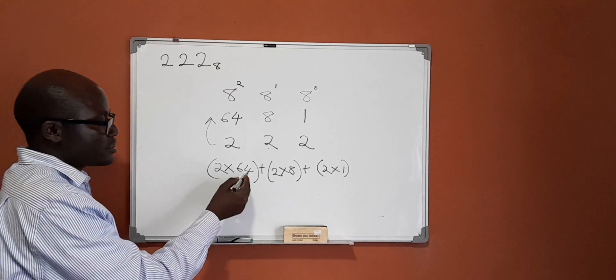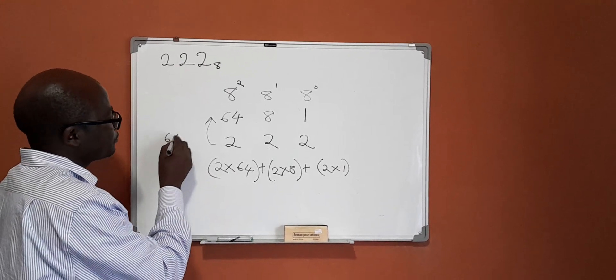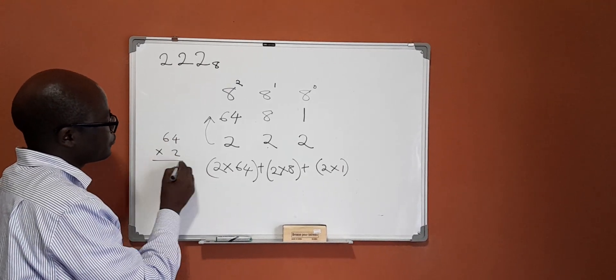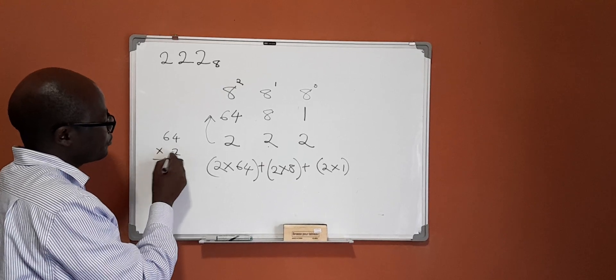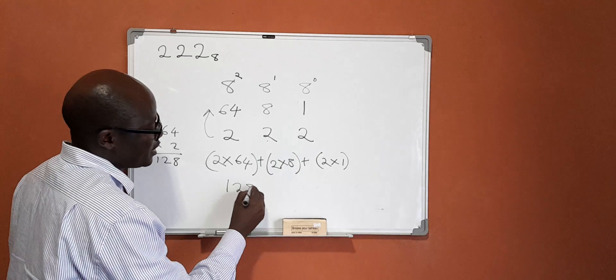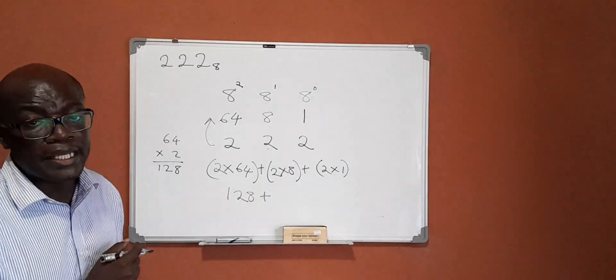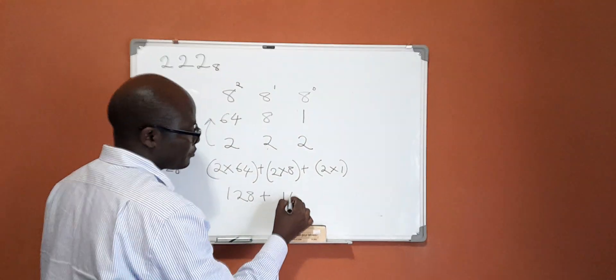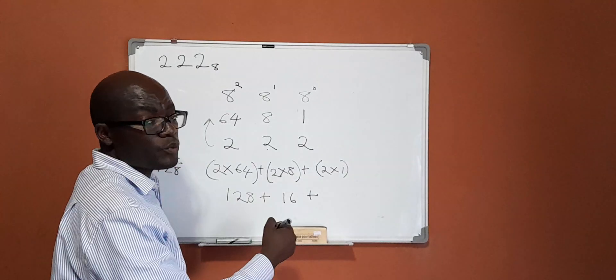What is 64 times 2? It is 128. So 128 plus, what is 2 times 8? 16. And what is 2 times 1? 2.